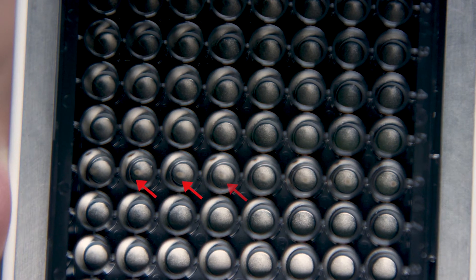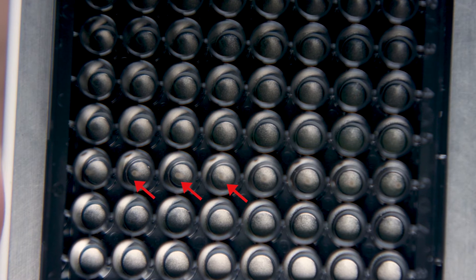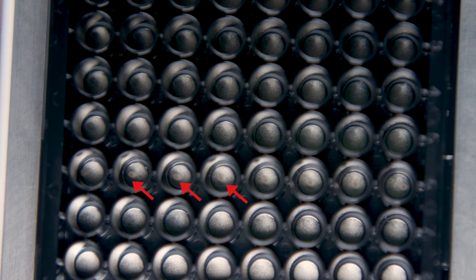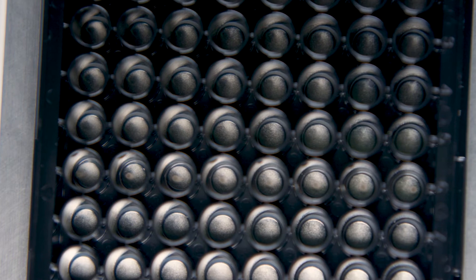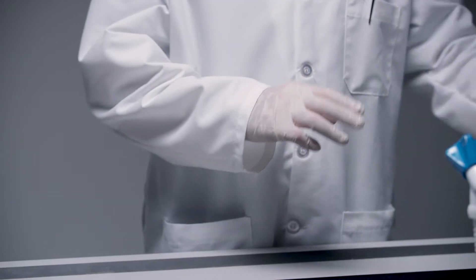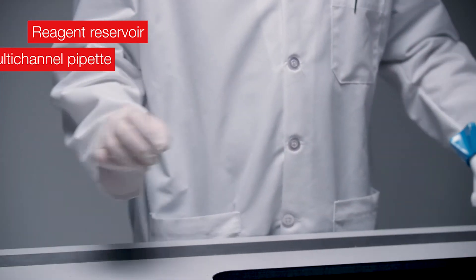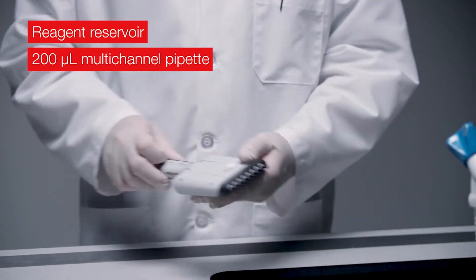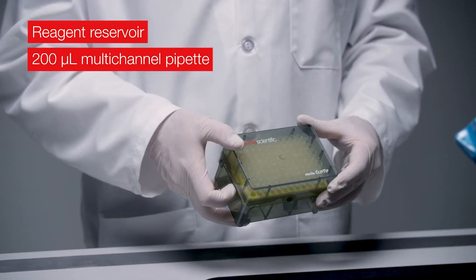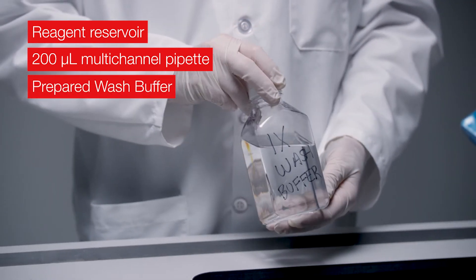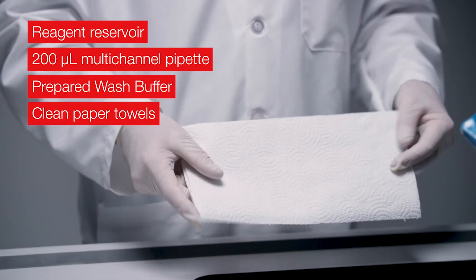Small but powerful round magnets are placed under each well of the plate and will centralize the magnetic beads in each well. To perform the wash steps, you will need additional equipment and reagents: a reagent reservoir, a 200-microliter multichannel pipette with tips, prepared wash buffer, and clean paper towels.